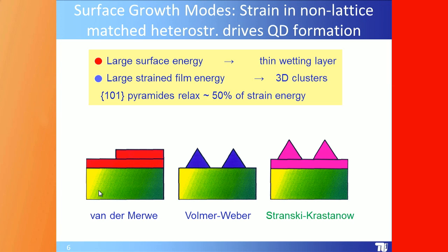Layer-by-layer growth occurs when you have large surface energy — you get a thin wetting layer (the Frank–van der Merwe mode). When you have very large strained film energy you get 3D clusters (the Volmer–Weber growth mode). A mixture of both is Stranski–Krastanov: you start with a thin wetting layer and then, after about one and a half monolayers, you start getting coherent clusters which are quantum dots.